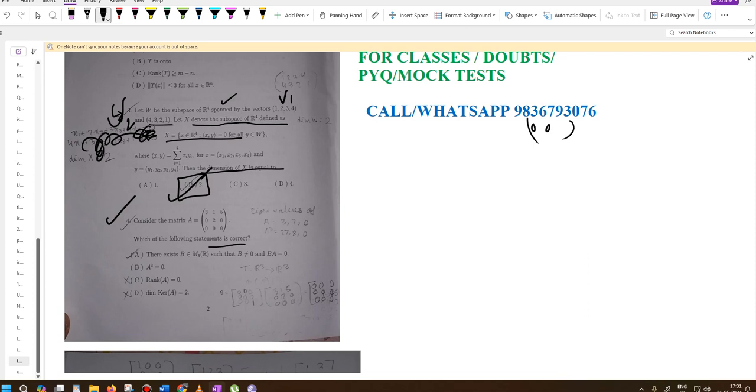Statement A says there exists a matrix B in M3(R) such that B not equal to zero and BA equals zero. We need to find if there exists a non-zero matrix B such that BA equals zero.